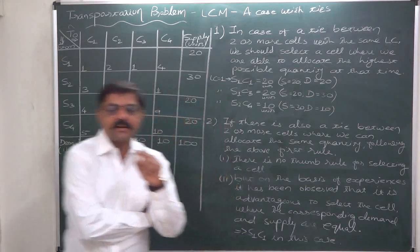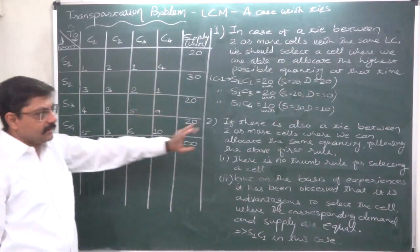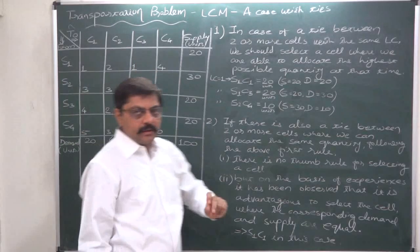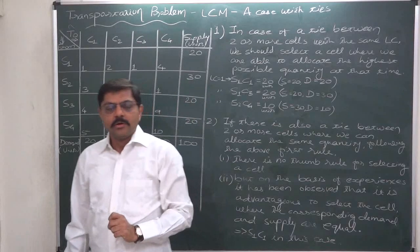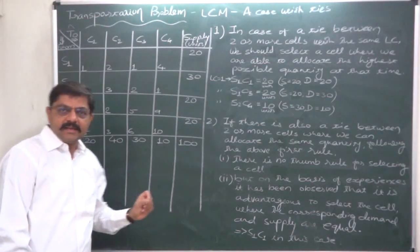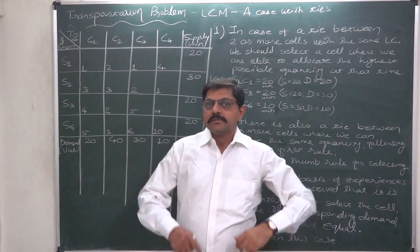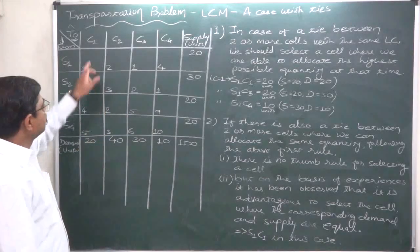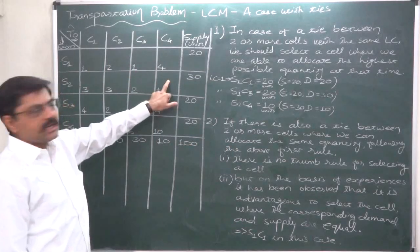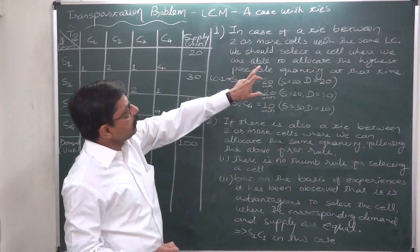In the Least Cost Method, we first select the cell with the least possible cost from the entire transportation table. The least cost here is one rupee per unit, but the new complication is that this least cost of rupee 1 appears in three different cells. So there is a matter of confusion — in which one of these three cells should we make the allocation?